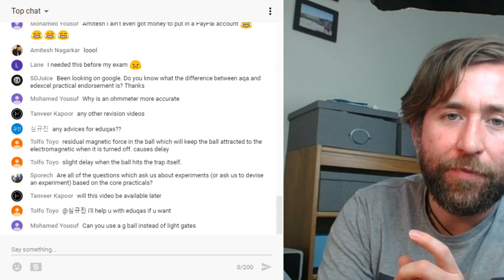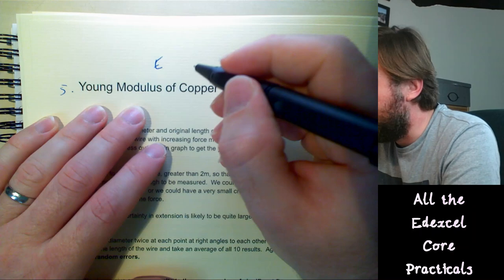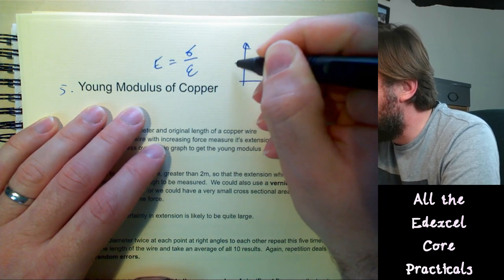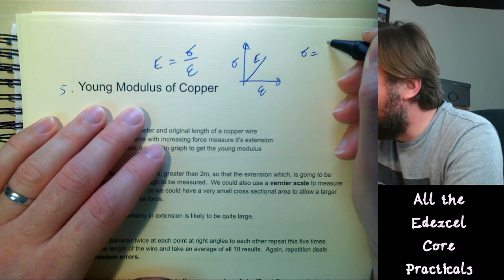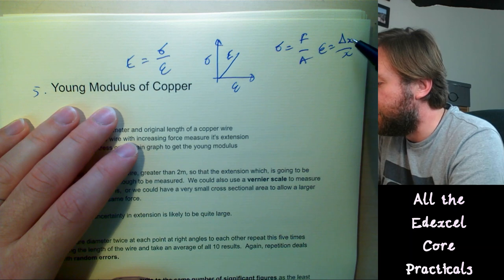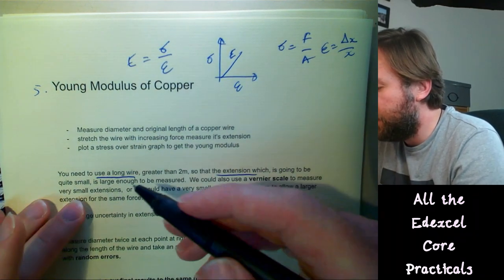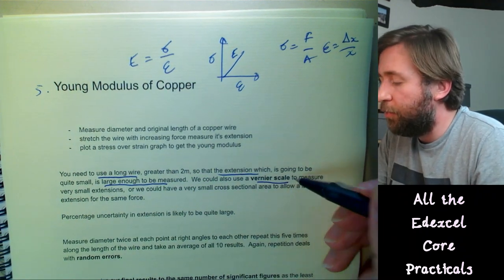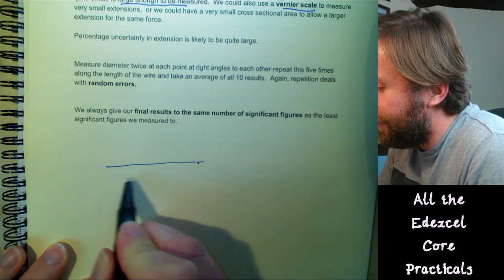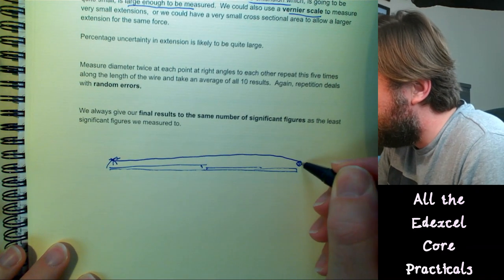Core practical 5 — Young modulus of copper. Start with the equation: Young modulus = stress / strain. Plot a stress–strain graph; the gradient is the Young modulus. Stress = force/area, strain = extension/original length, so you need to measure force, cross-sectional area, extension, and original length. Normally you use a very long wire — over two metres — to make the extension large enough to measure accurately. The wire is stretched over desks with masses added via a pulley.